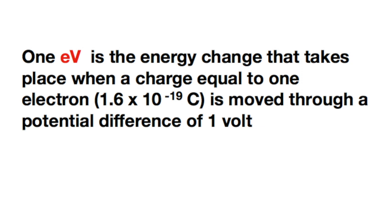An electron volt is the energy change that takes place when a charge equal to one electron is moved through a potential difference of one volt.